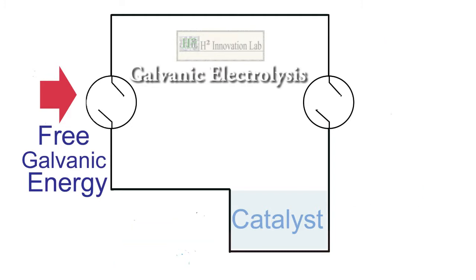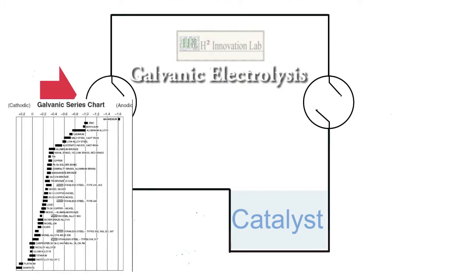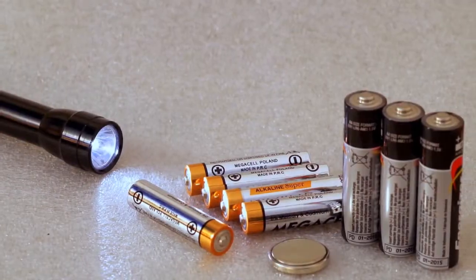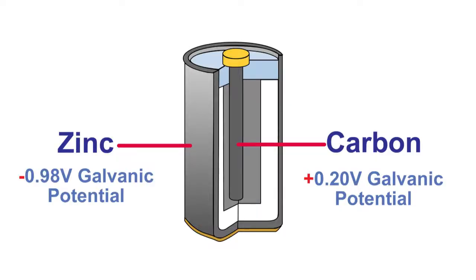The free energy that is being transferred is galvanic energy released from bimetals that exhibit differing voltage potentials. For example, the common dry cell torch battery consists of two metals of differing galvanic potential, which cause electrons to move through a circuit from one metal to the other.